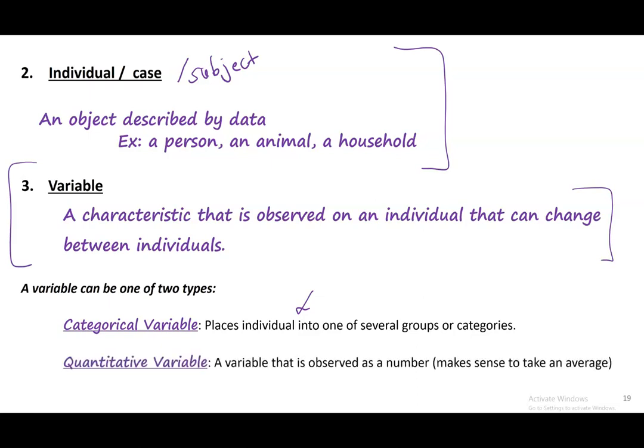The other common type of variable is quantitative — a variable that's observed as a number. These kinds of variables make sense to take an average of. For example, if I collected everyone's height, that would be a quantitative variable.